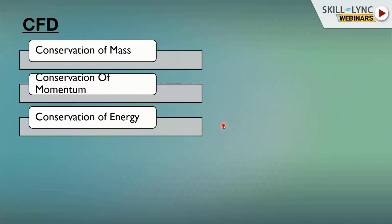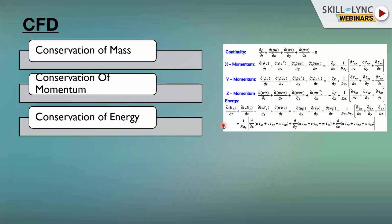You can understand the conservation laws with a simple analogy. Consider a bank account where you receive a salary or stipend. One day you withdraw some money. The leftover is the balance plus interest given by the bank. So you have an inlet (your balance), an outlet (the amount you withdraw), and a source (the interest from the bank). Based on this analogy, we have a set of equations called the Navier-Stokes equations. Please don't be afraid of these equations — they can be solved, and they are one of the million-dollar problems in mathematics.